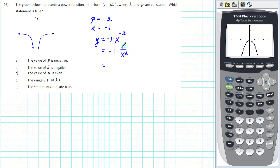And when we multiply -1 by 1, we get -1 divided by x squared.